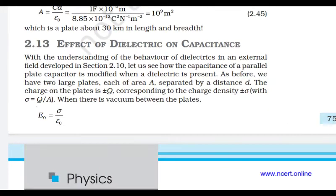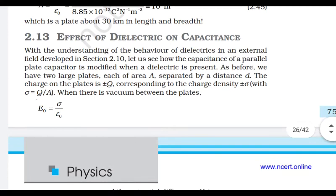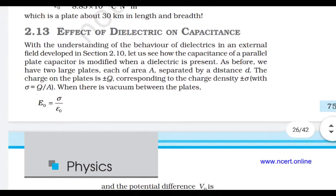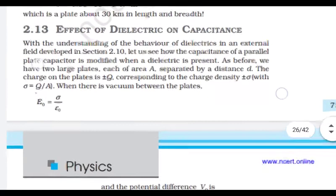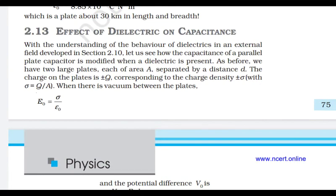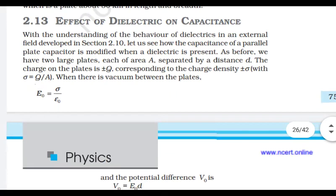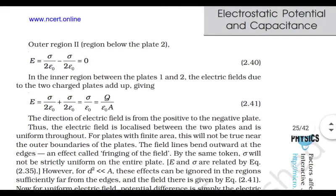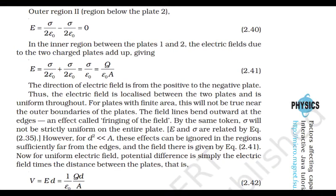Let's say the two large plates each have area A, separated by distance d. The plates are charged +Q and -Q, with surface charge density +σ and -σ. When there is vacuum between the plates, E₀ = σ/ε₀, which is the field between the plates. There is no electric field outside the capacitor — only between the plates — which equals Q/(ε₀A), as in equation 2.41.